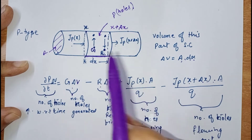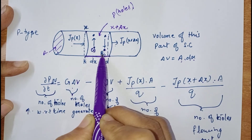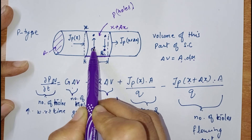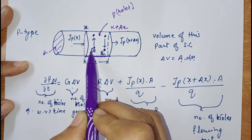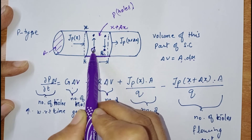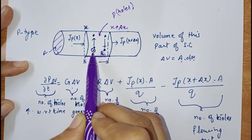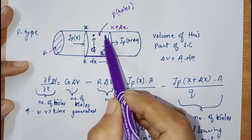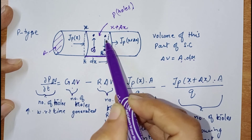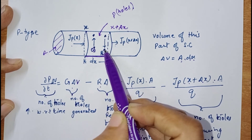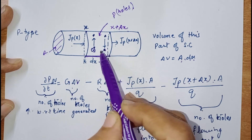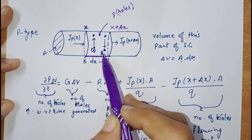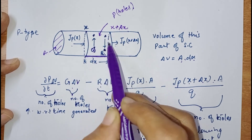Hole concentration changes due to generation and recombination. Generation takes place when electrons from the valence band jump to the conduction band, so the number of holes increases in this particular area. Recombination takes place when an electron from the conduction band falls back to the valence band, so the electron-hole pair disappears and hole concentration decreases. Thus generation and recombination affect hole concentration in this particular volume.